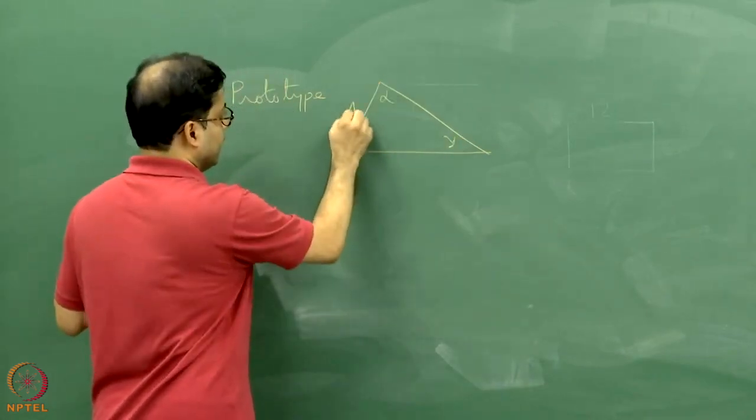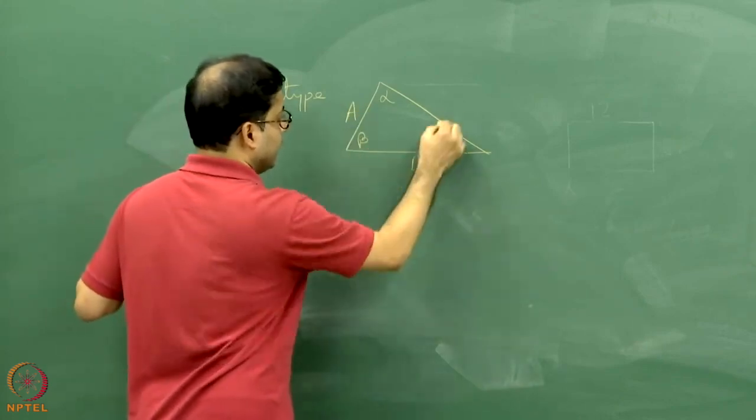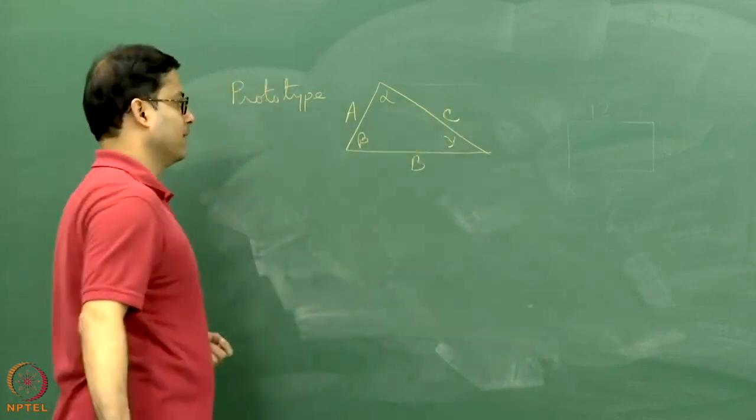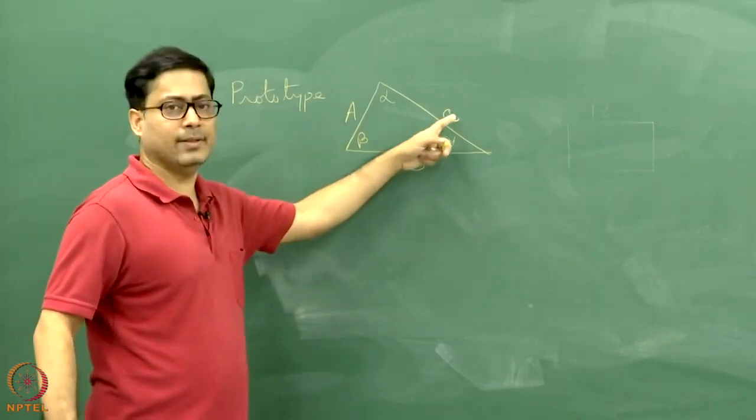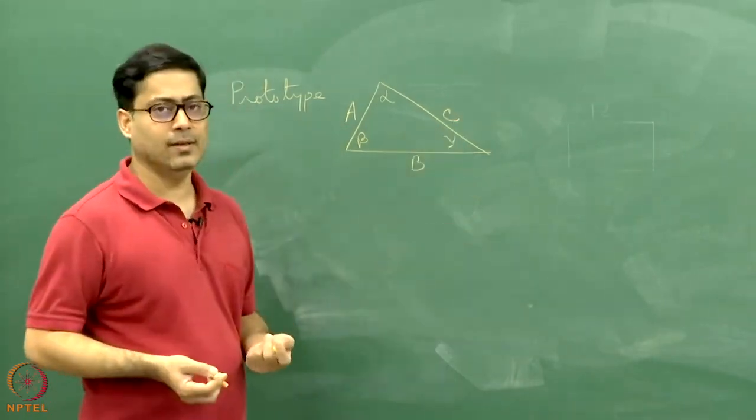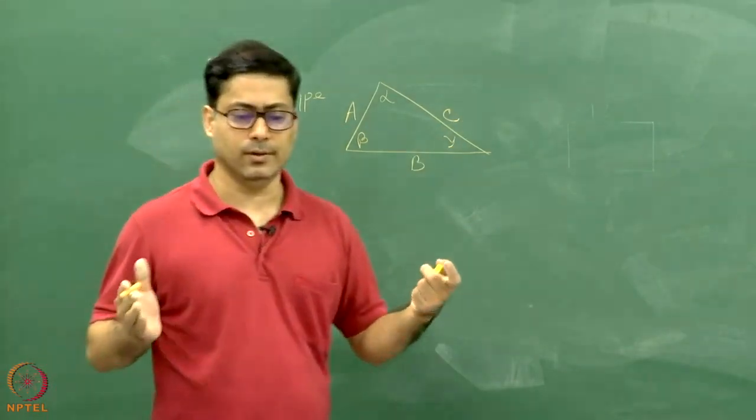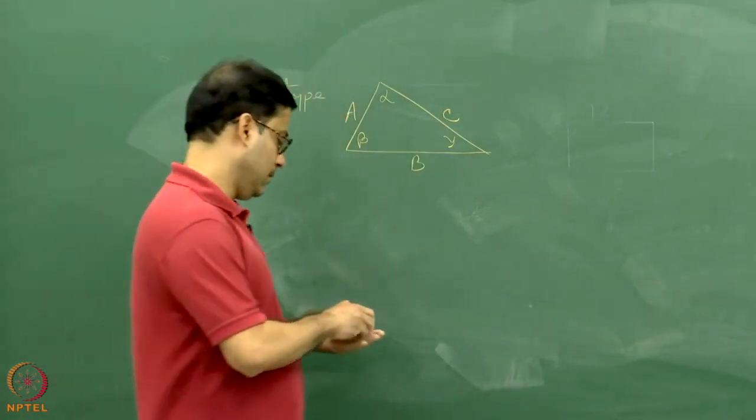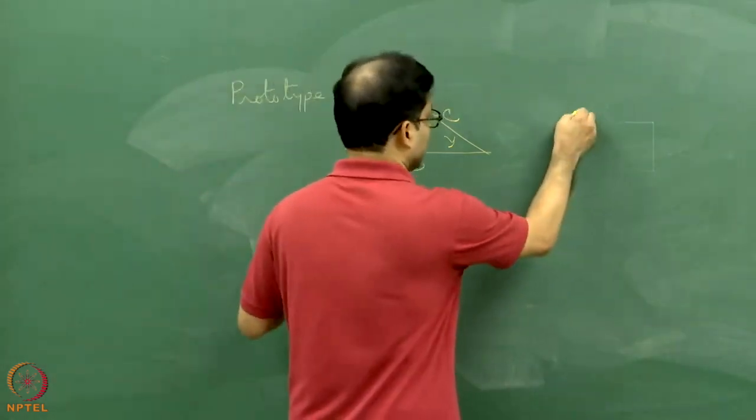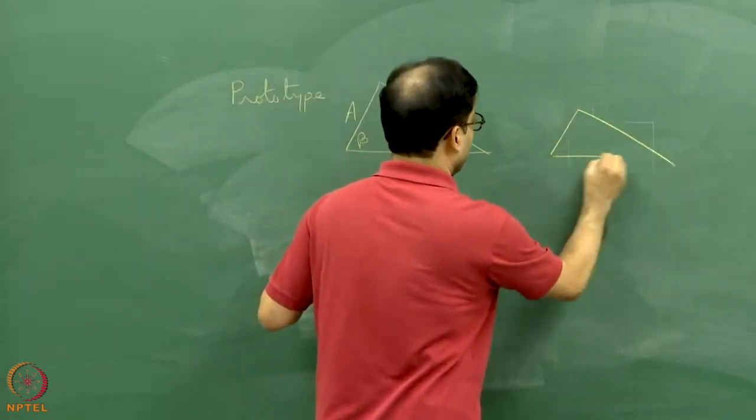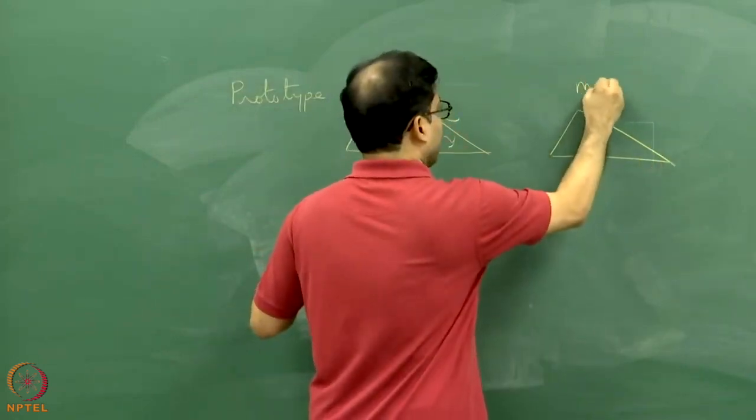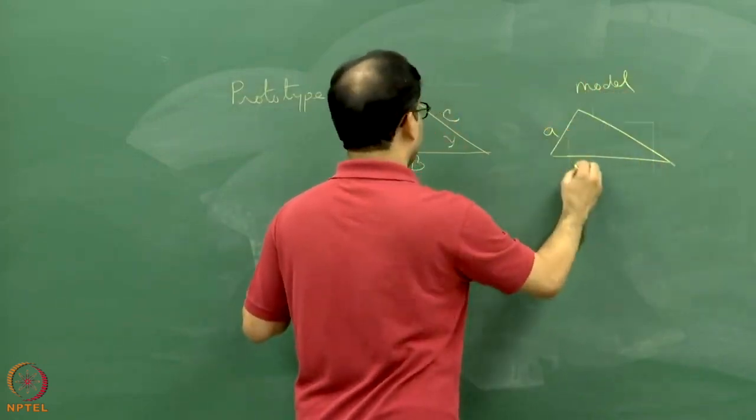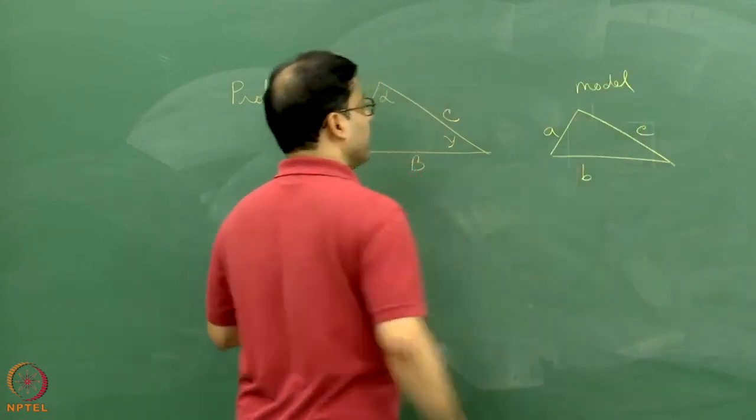This length is A, that length is B, and that length is C. Again, capital A, capital B, and capital C are several kilometers. I cannot have kilometer-long clay layers in the laboratory, so I will take centimeter-long layers. I will choose a smaller triangle as model where A, B, and C will be maintained.